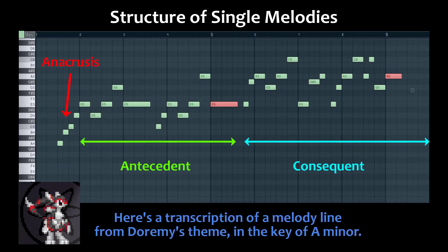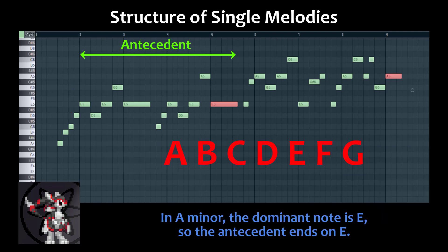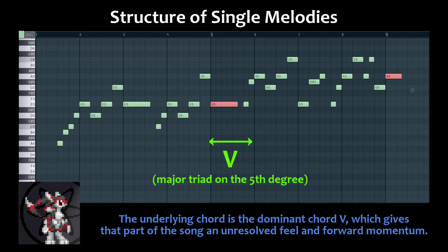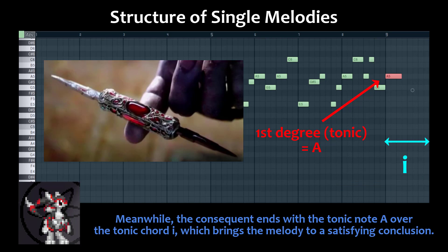Here's a transcription of a melody line from Dormi's theme in the key of A minor. In A minor, the dominant note is E, so the antecedent ends on E. The underlying chord is the dominant chord major V, which gives that part of the song an unresolved feel and forward momentum. Meanwhile, the consequent ends with the tonic note A over the tonic chord I, which brings the melody to a satisfying conclusion.